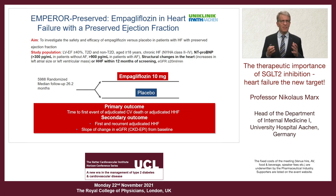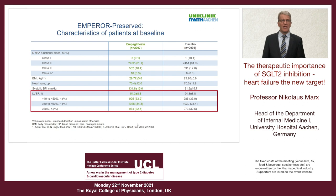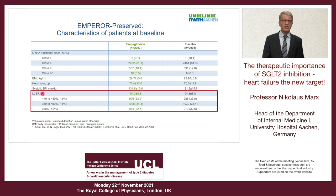The primary endpoint was similar to EMPEROR-Reduced: time to first hospitalization for heart failure or CV death. Looking at the population by ejection fraction, one-third had an EF between 40–50%, one-third between 50–60%, and one-third above 60%, covering the whole range.